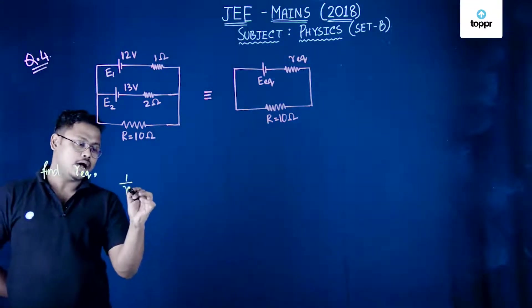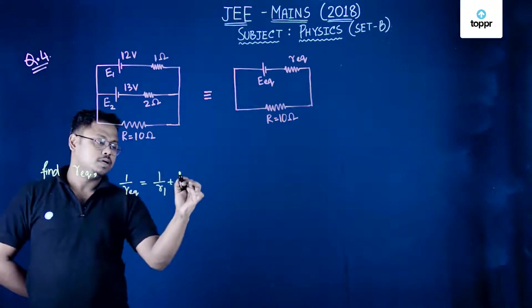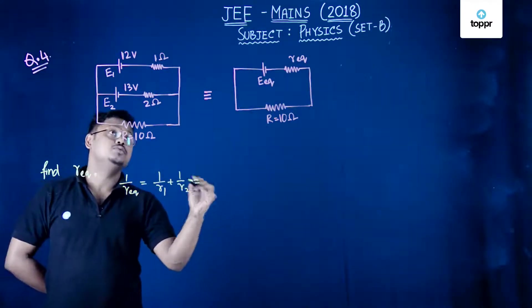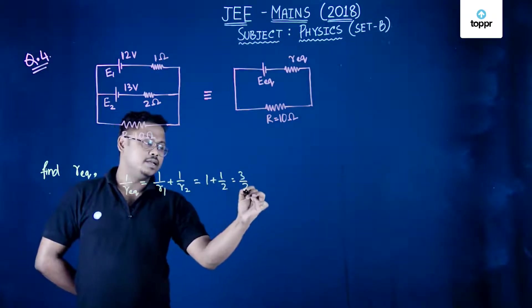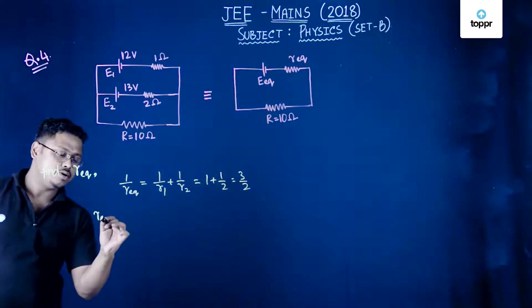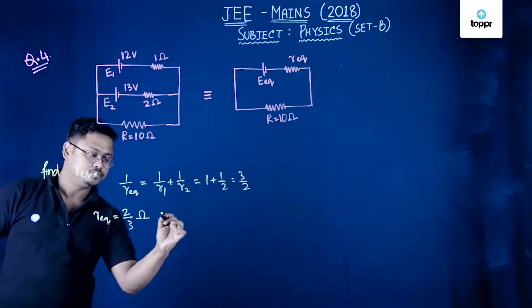You know 1 by R equivalent equals 1 by R1 plus 1 by R2, that equals 1 plus half, that is 3 by 2. So R equivalent equals 2 upon 3 ohm, right?